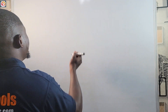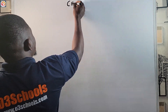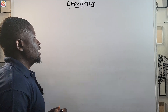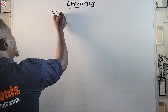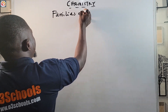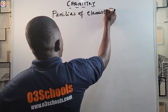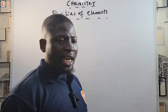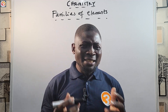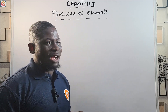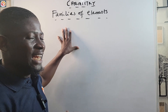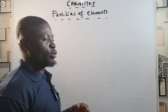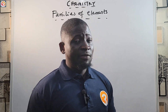Hello guys and welcome back to another episode of Chemistry is Chemistry. Today we are going to be looking at families of elements. Elements of a periodic table that show a similarity in properties are what we call a family of elements.